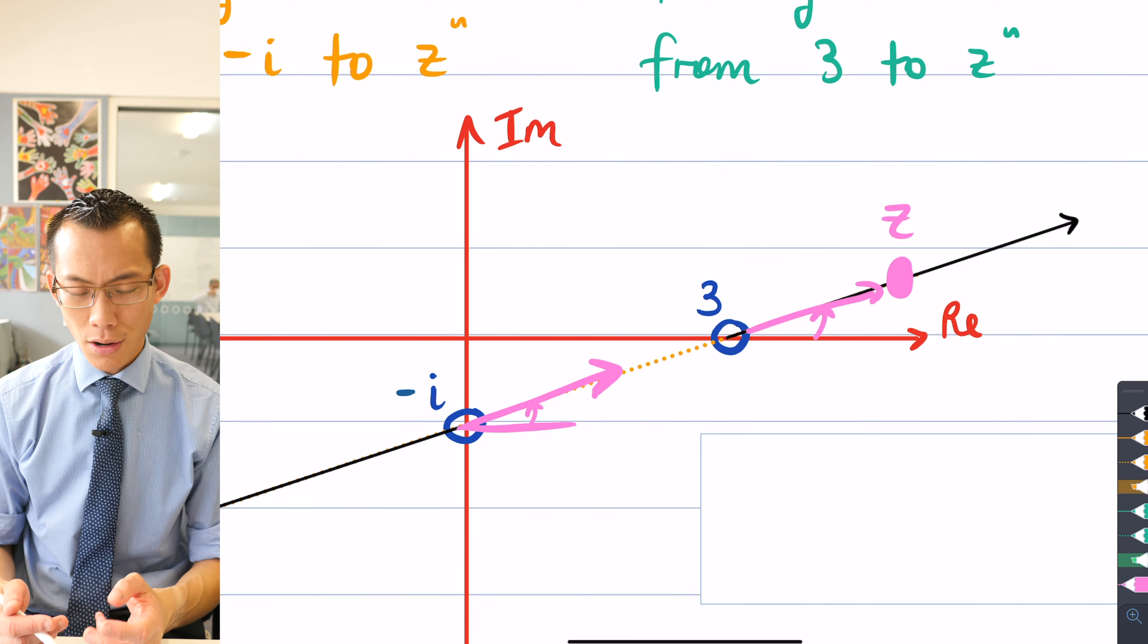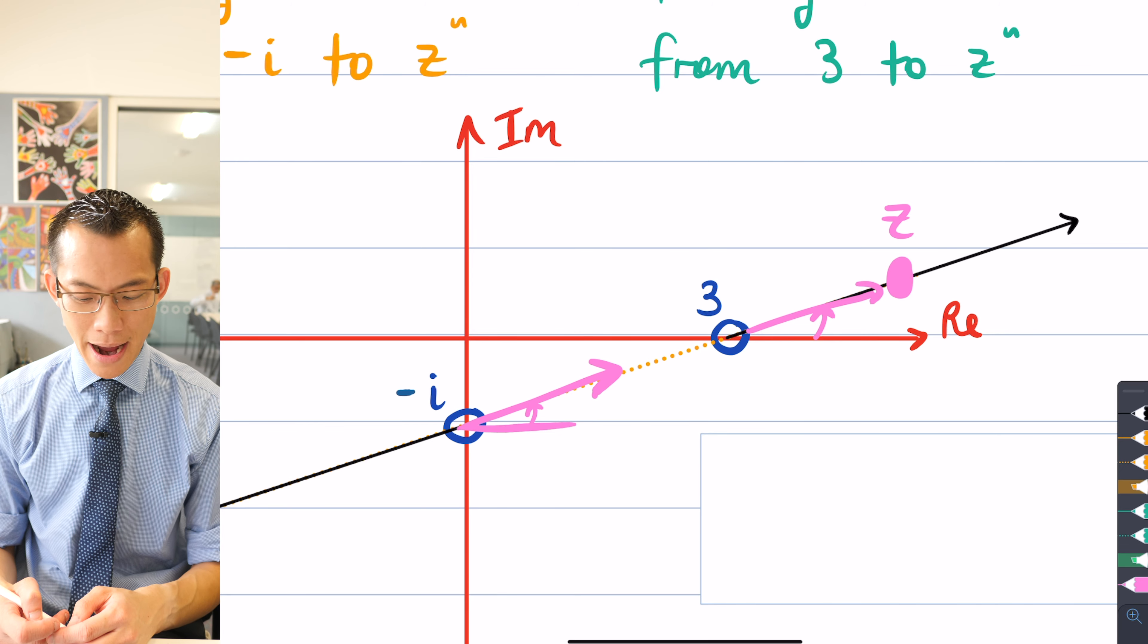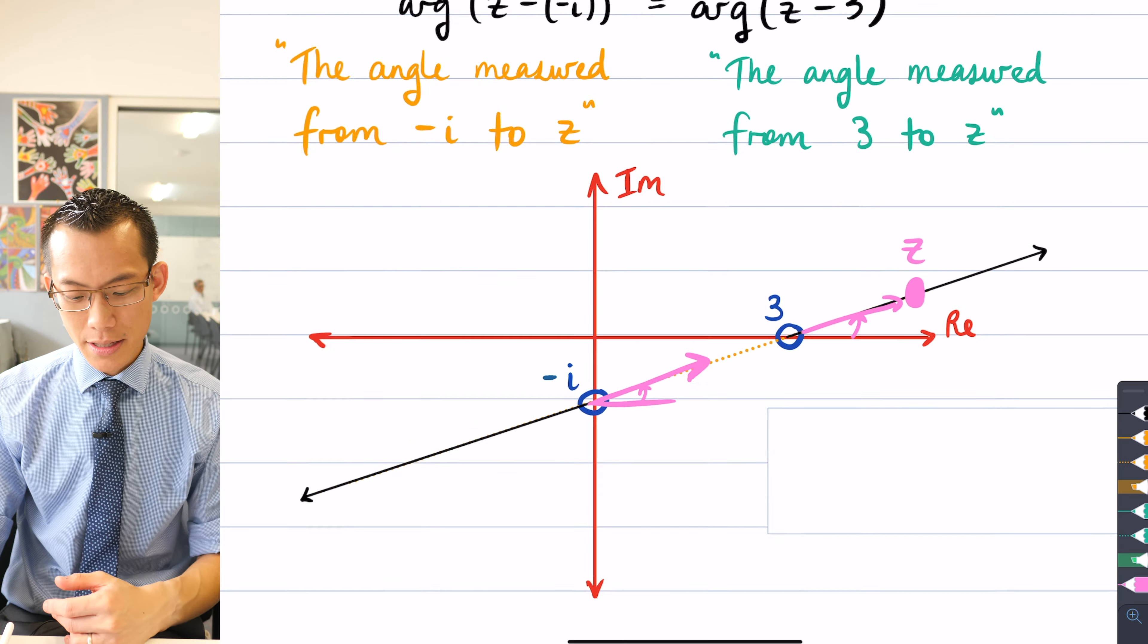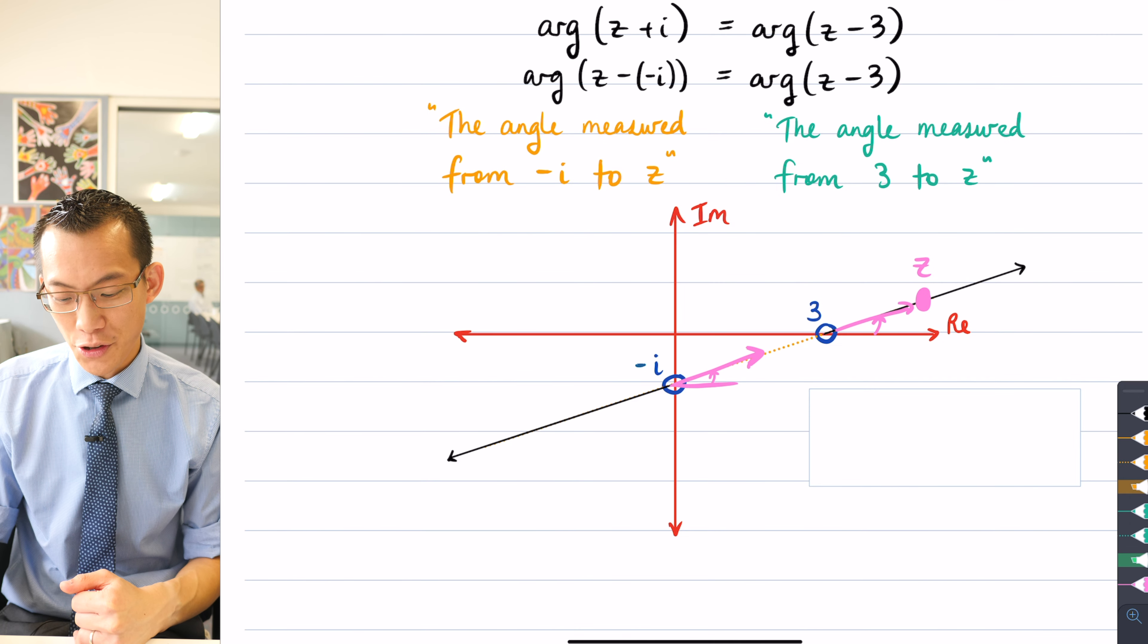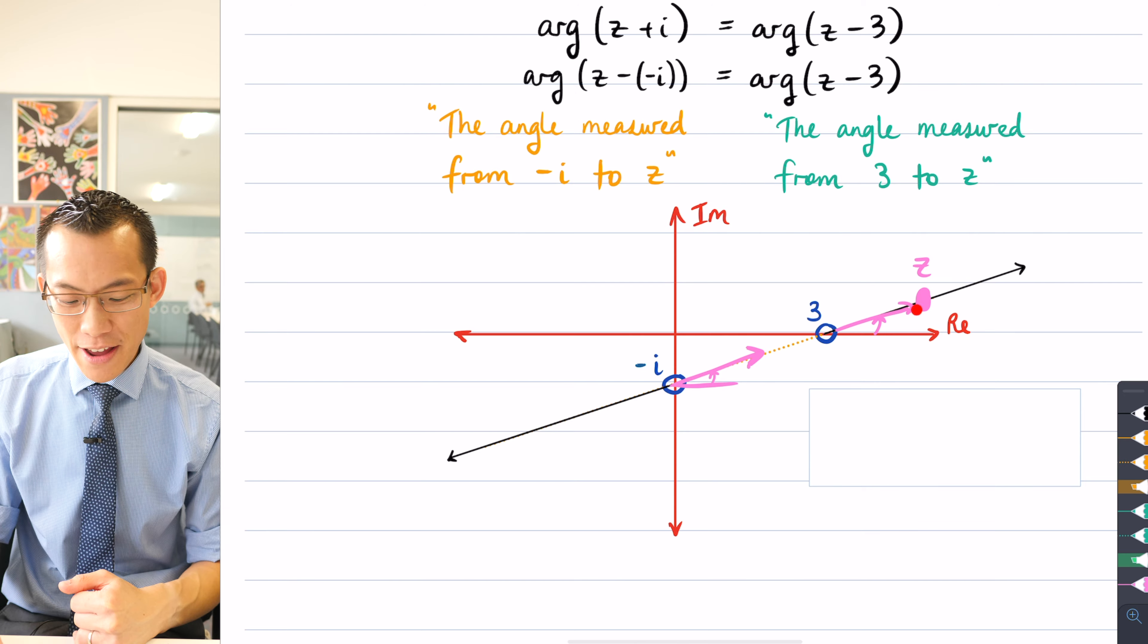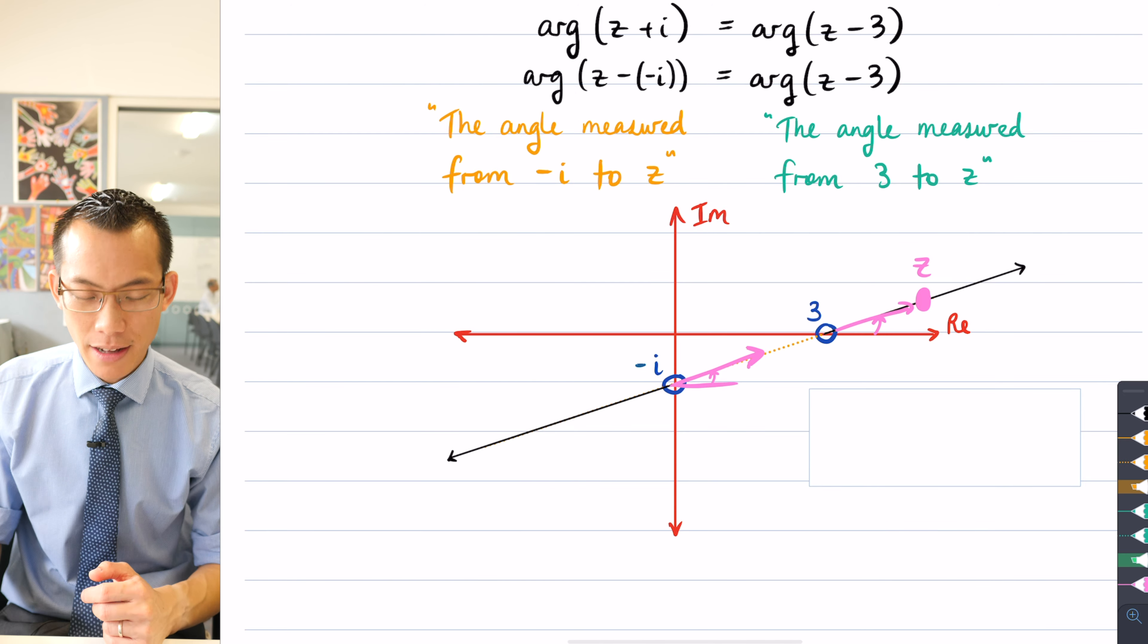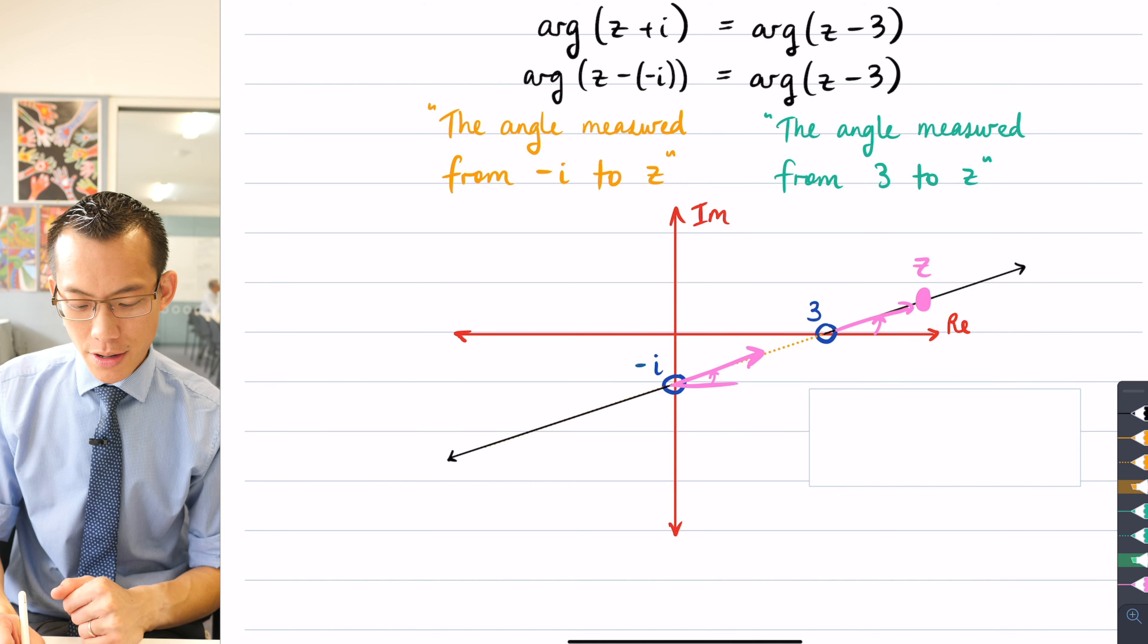You can see this is literally just corresponding angles on parallel lines, so that's why the angles are the same, the arguments are the same. You could make the same point if you were on the other side using the same logic. All of these points on these two black lines are right.